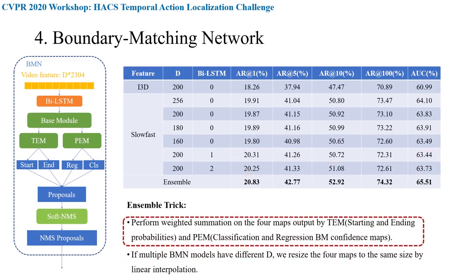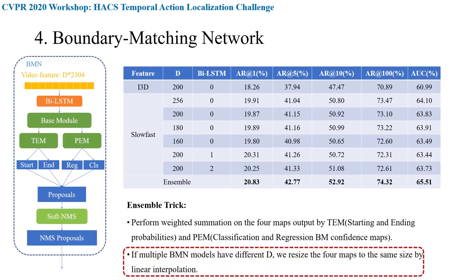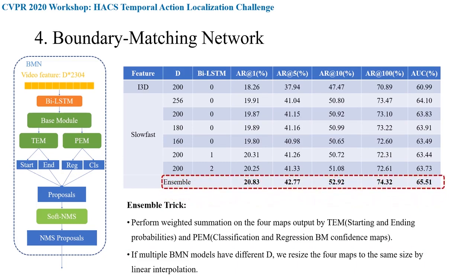We assemble multiple BMN models on the confidence maps output by TEM and PEM. TEM outputs start and end time probabilities, and PEM outputs boundary matching confidence maps. We average the four maps between different models, using linear interpolation to resize maps to the same size when needed. This ensemble strategy directly improves the proposal performance of BMN output.